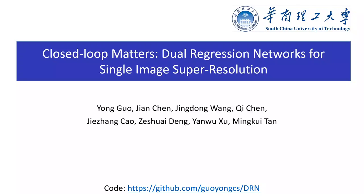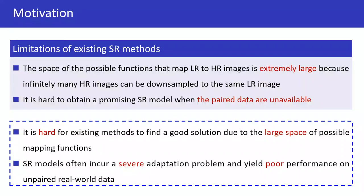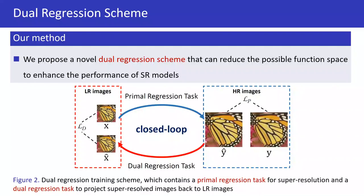Our paper is 'Coarse Root Matters: Dual Regression Networks for Single-Image Super-Resolution.' We found that the space of possible mapping functions is extremely large, and it is hard to obtain a promising SR model even when paired data are available. To reduce the possible function space,